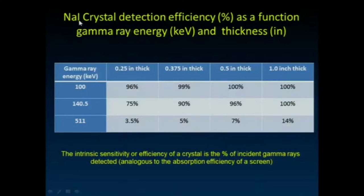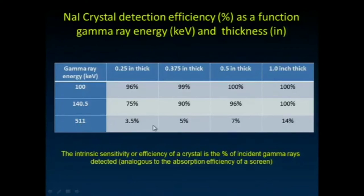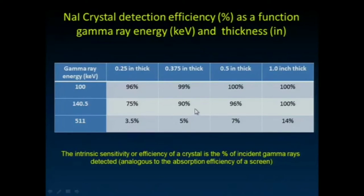Let's look at the sodium iodide crystal's efficiency for stopping gamma rays of particular energies. At 100 keV, 140 keV — this is technetium — and up to 511 keV as in PET, we compare quarter-inch, three-eighths-inch, and thicker crystals. For 140.5 keV, the three-eighths inch thickness stops about 90% of gamma rays from technetium-99m, which is very nice.